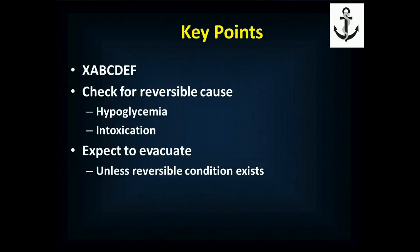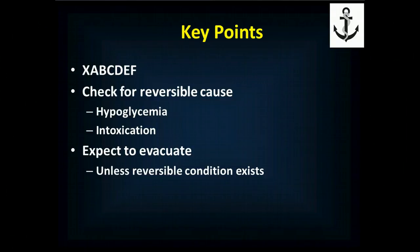If you have a patient with altered mental status, particularly one who's completely unresponsive, the treatment is pretty straightforward regardless of what's going on. You check XABCDEF: control any exsanguinating hemorrhage, make sure they have a patent airway, that they're breathing adequately, that they have a pulse, check their neurologic function, expose them, and look for any clues as to what's going on. Then protect them from the environment and find other scene clues that will tell you what's going on.